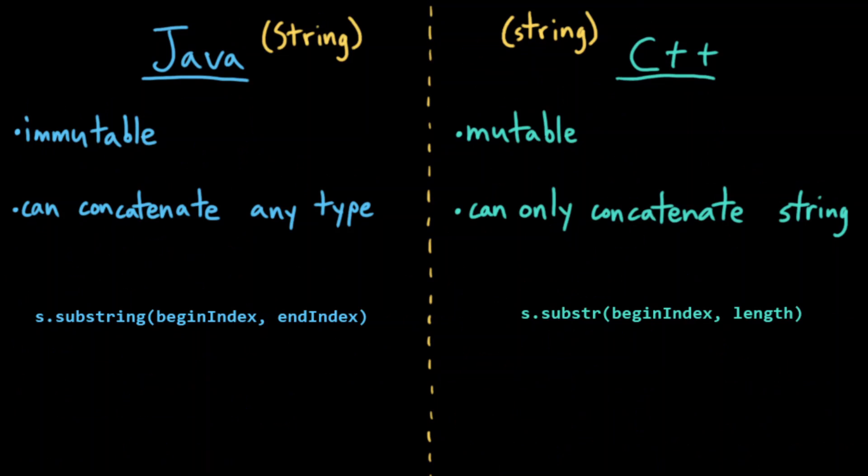We should also talk about strings between Java and C++. In Java, we have a string class, remember it has an uppercase S. Whereas in C++, we have a string type, which has a lowercase S.